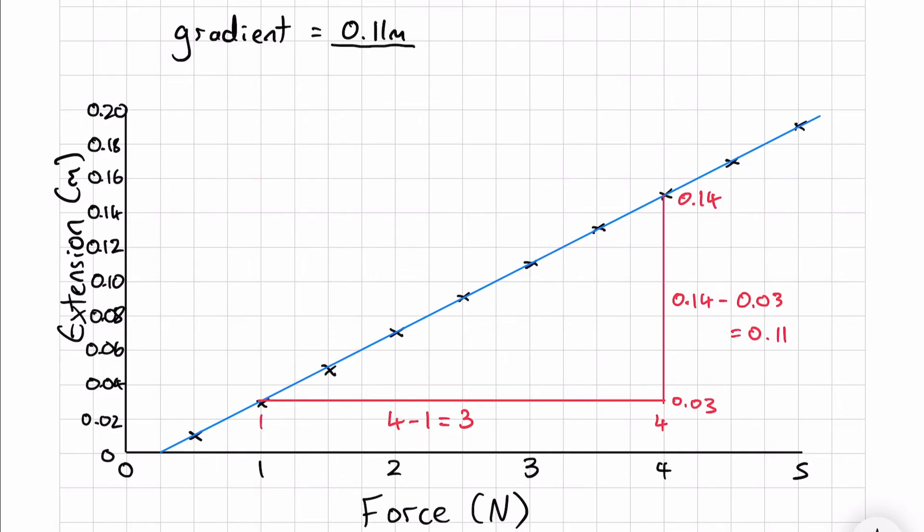In this experiment, if the rise is 0.11 meters and the run is 3 newtons, the gradient is 0.036 recurring meters per newton.